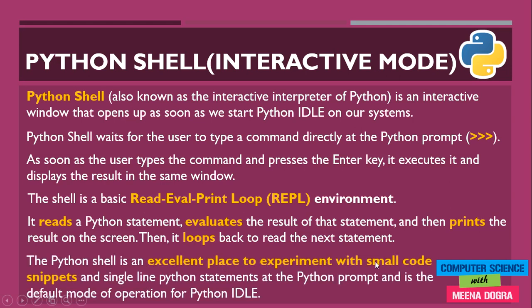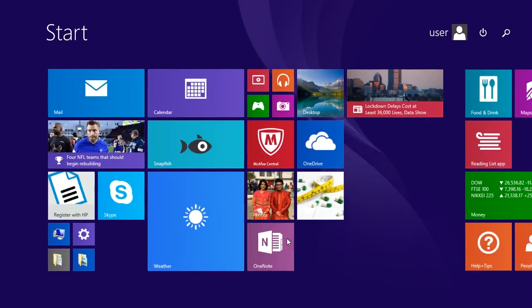The Python shell is an excellent place to experiment with small code snippets and single-line Python statements at the Python prompt, and is the default mode of operation for Python IDLE. If you want a quick feel of Python or want to try out small commands and experiment with small codes, the right way is to use Python's interactive mode. It's an excellent place for beginners to get answers immediately.